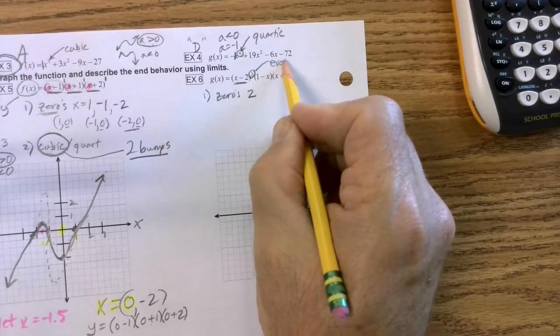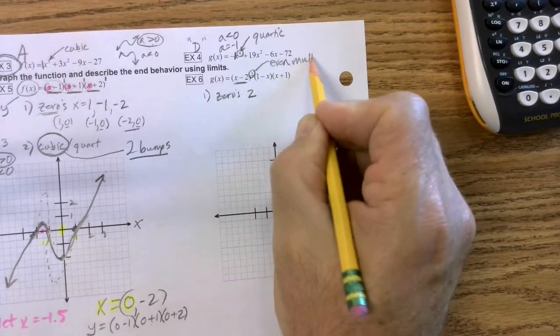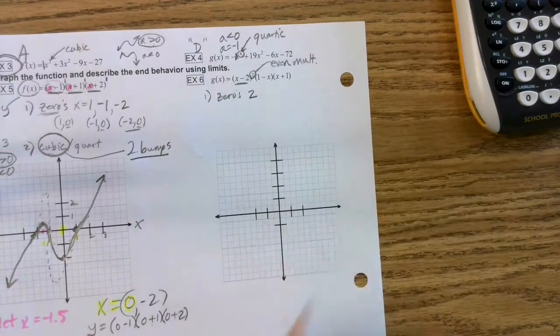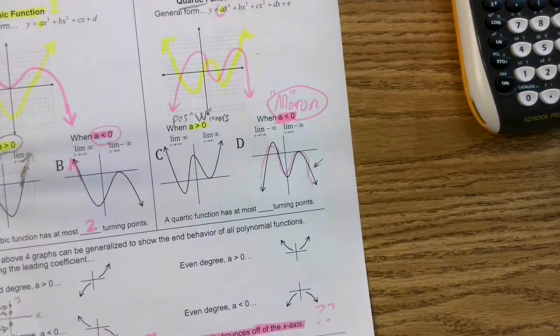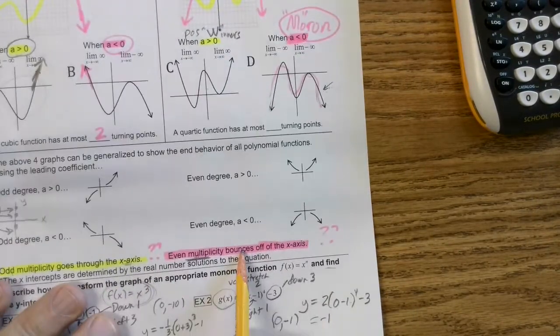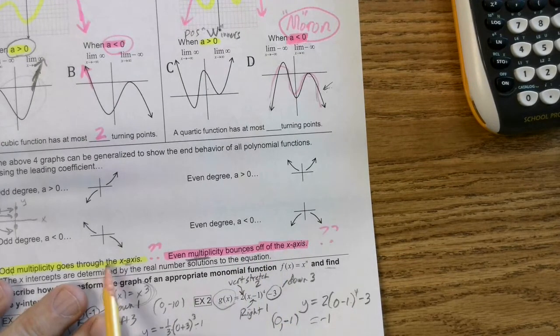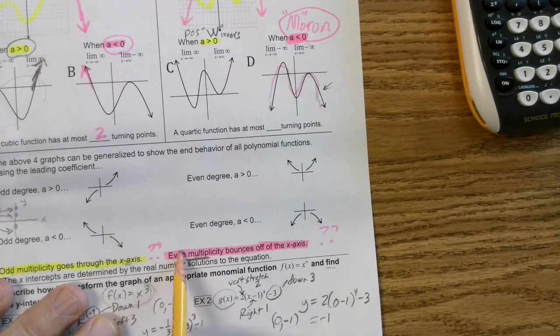That is our even multiplicity. I'm going to abbreviate. What does that mean? It means it's going to bounce. It's going to bounce off the x-axis as opposed to going through it. That's a huge, huge clue, but very subtle.